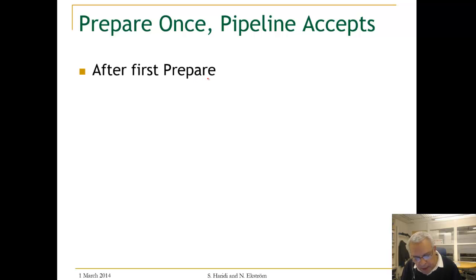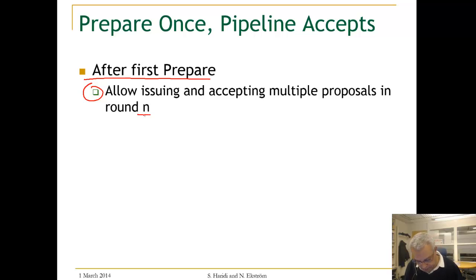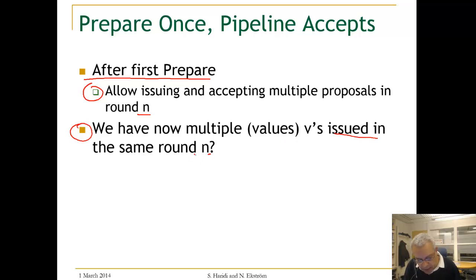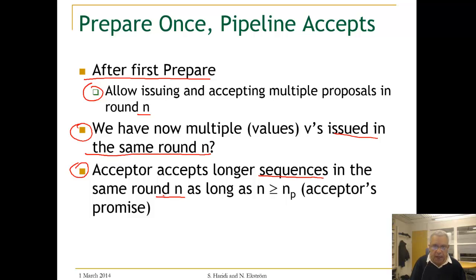After the first prepare, we allow issuing and accepting multiple proposals in round n. We now have a situation where multiple proposals are issued in a single round. We also have to address what it means for acceptors: acceptors will accept longer sequences in the same round. In round n, when receiving multiple sequences, an acceptor will accept the longest one.